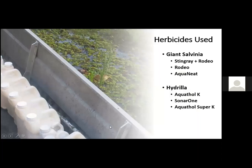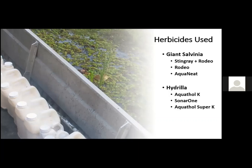Looking at what was used in the past, salvinia treatments typically used glyphosate — either Rodeo or Aquaneat. One year there were experimental treatments using a mixture of Stingray contact herbicide with Rodeo to see if they could get better control. For hydrilla control, they used Aquathol K, Sonar 1, and Aquathol Super K. Several Sonar 1 treatments targeted specific areas of the reservoir, but we had quite a bit of drift in those areas and ended up wiping out a lot of the plant community, both native and non-native.